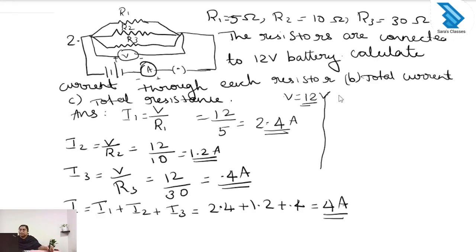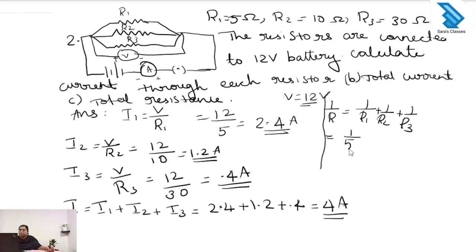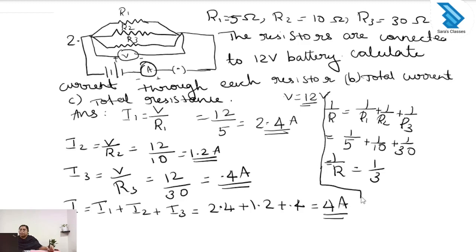Next we have to find the total resistance. When the resistors are connected in parallel, the equation is 1 by R equals 1 by R1 plus 1 by R2 plus 1 by R3, which is 1 by 5 plus 1 by 10 plus 1 by 30. The answer gives 1 by R equal to 1 by 3, so taking the reciprocal, R equals 3 ohm.